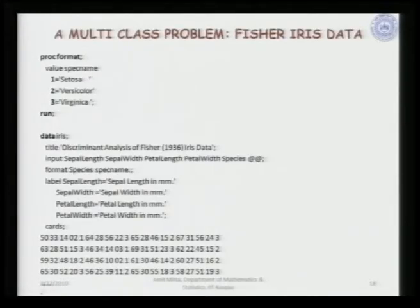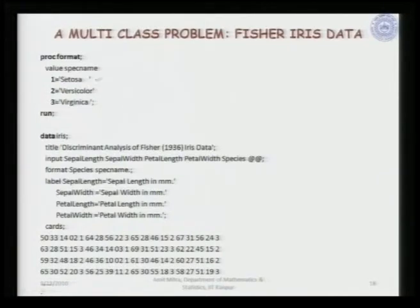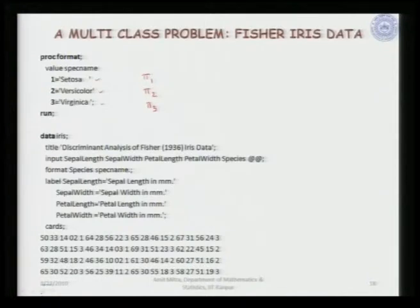We first have this data, which is a very standard dataset called the Fisher iris data. It corresponds to three species: Setosa, Versicolor, and Virginica. These are the three classes, representing three populations pi 1, pi 2, and pi 3, corresponding to the three different species of this particular dataset.